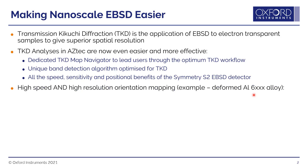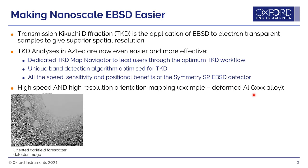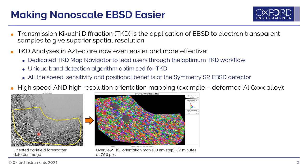What this gives us is both high speed and high spatial resolution orientation mapping. Here are some example images from a deformed aluminium 6000 series alloy. On the left-hand side we have an oriented dark field forescatter image — the field of view is about 60 microns across. Up in the top right we have the perforation on this electropolished foil, and we can see the nanostructured grain structure. We're mapping the area shown with the yellow line. This is a survey scan using a step size of 30 nanometers at a speed of about 750 indexed patterns per second.